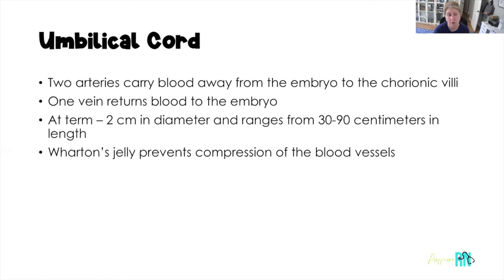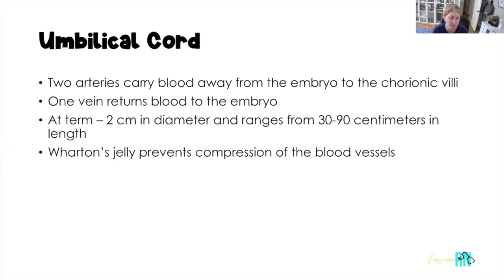Moving on to the umbilical cord. There are two arteries that carry blood away from the embryo to the chorionic villi, and one vein that returns blood to the embryo. So everything from mom's circulatory system comes in through that vein, and waste leaves through those arteries back to mom to be disposed of. At term, the umbilical cord is about two centimeters in diameter and 30 to 90 centimeters in length. Inside is a substance called Wharton's jelly, which prevents the umbilical cord from getting crushed if the baby rolls over on it.